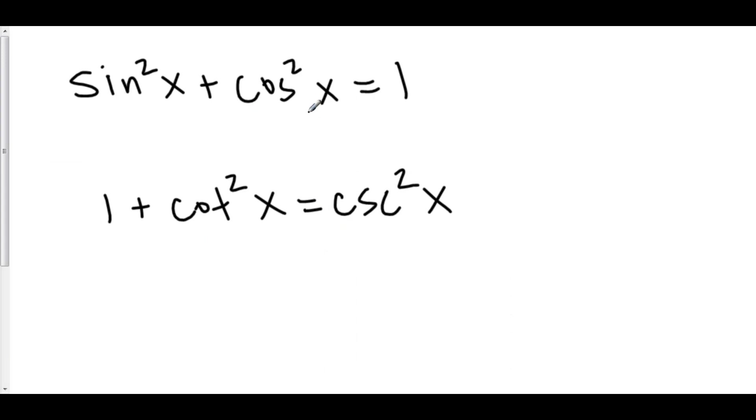If you divide everything by cosine squared, sine squared over cosine squared is tangent squared. Cosine squared divided by cosine squared is 1, and 1 over cosine squared is secant squared.